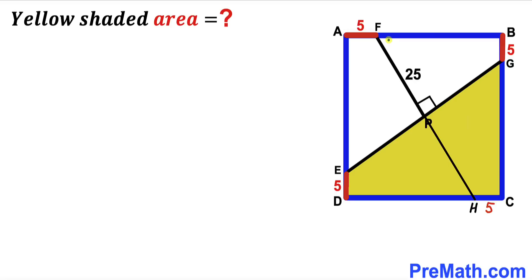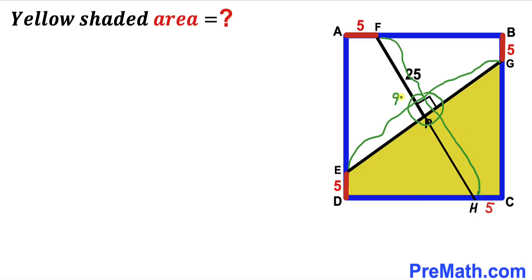Now let's make an observation: we can see that diagonal FH and diagonal EG are perpendicular to each other, meaning it's a 90-degree angle.